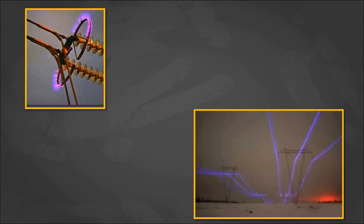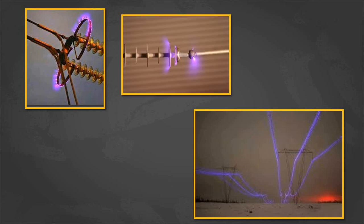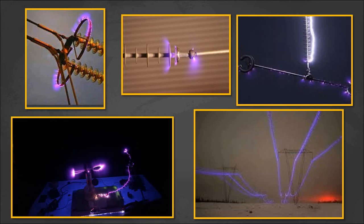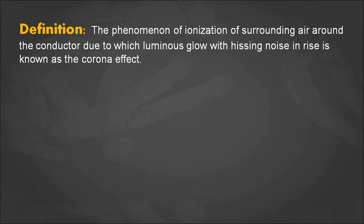Here we can see an insulator which is affected by the corona — we can observe the violet glow around the insulator. Similarly, we can see the violet glow around the conductor. This is called the corona effect. In all these images the common thing we can observe is the violet glow around the insulator or around the conductor.